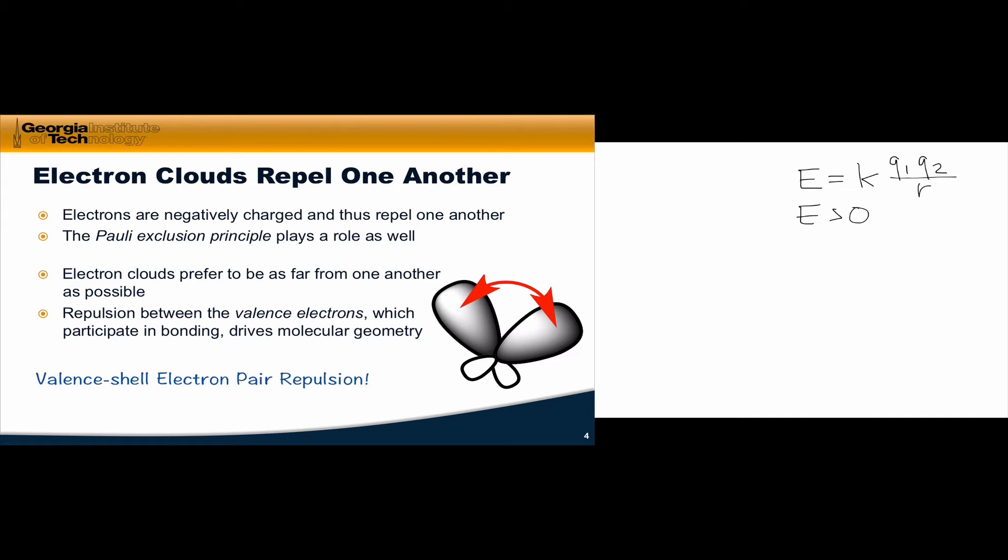So now we see why the model is called valence shell electron pair repulsion. Moving from a Lewis structure to a molecular geometry is just a matter of identifying where the electron clouds are in space and then placing them as far apart from one another as we can possibly get them.